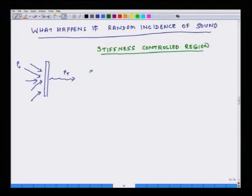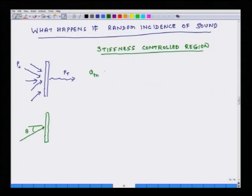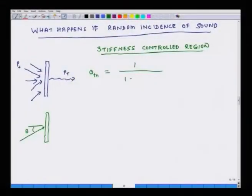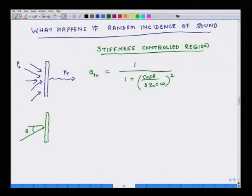Now, for oblique incidence — if theta is my angle of incidence — the attenuation is defined by an existing relation which I will replicate here. The attenuation for oblique incidence when the angle of incidence is theta has been found to be very similar to the relation we developed for normal incidence, except for the addition of a cos theta term. If theta becomes 0, we have normal incidence and this relation becomes the same as that for normal incidence.